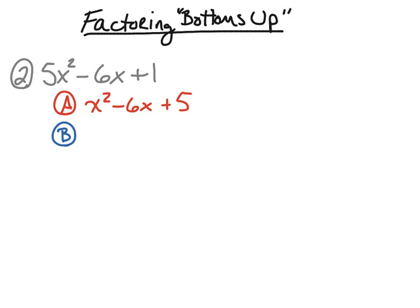Next, I'm going to take x² − 6x + 5 and factor it. I need two binomials. To get x², we need x times x. Now I need factors of 5 that add up to negative 6. Those two numbers are negative 5 and negative 1, because (−5) × (−1) = positive 5, and (−5) + (−1) = negative 6.